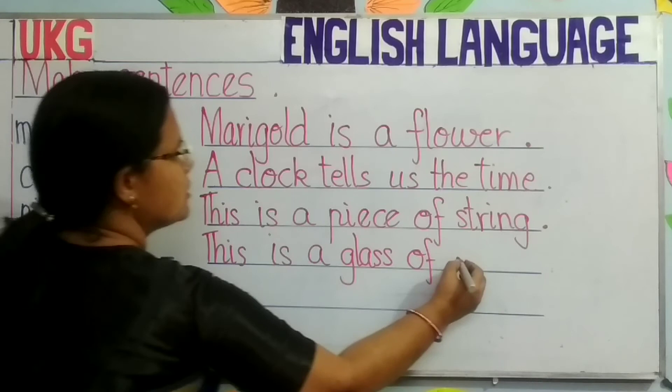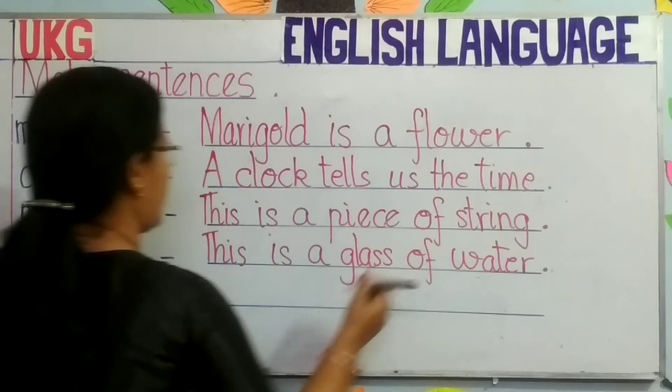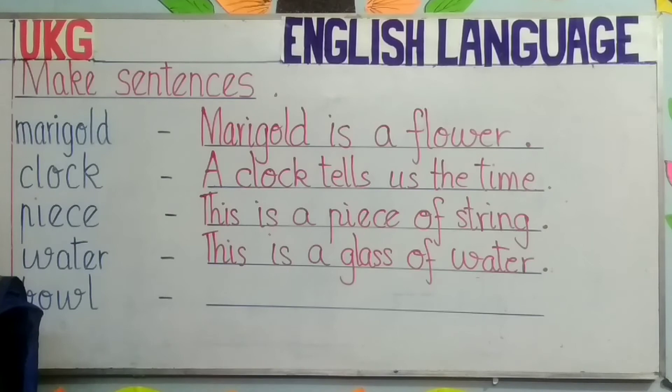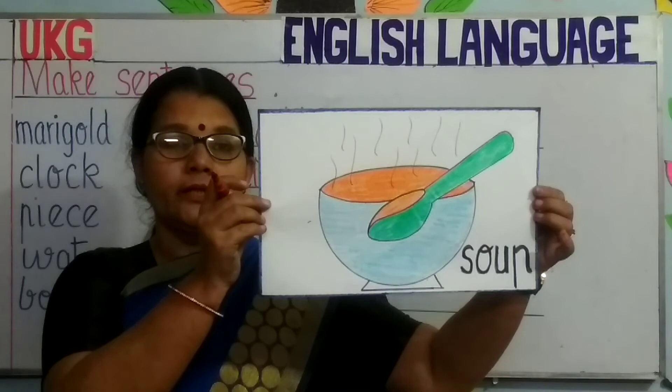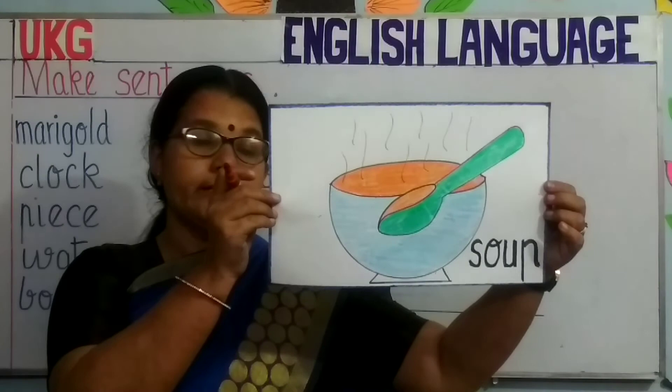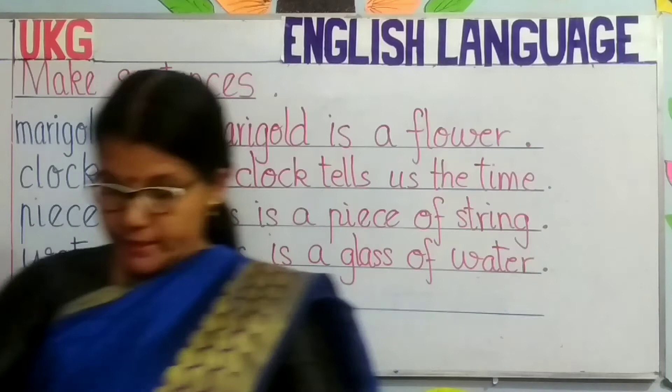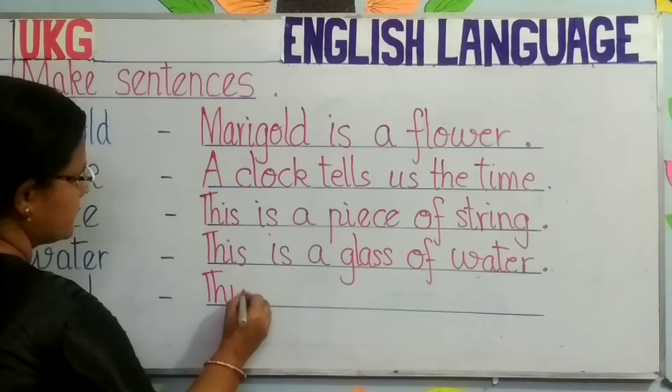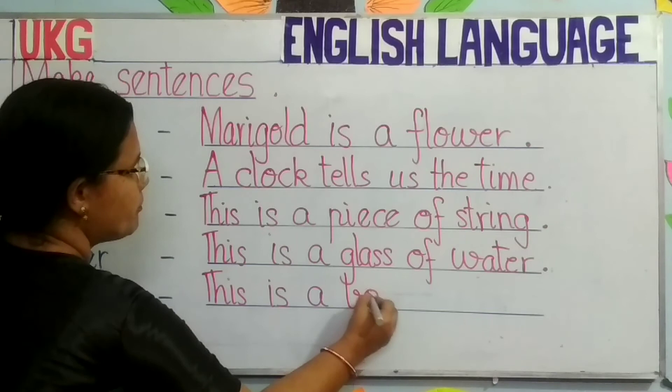And the last word: bowl. What is a bowl, children? Look here — this is a bowl. You can write: This is a bowl of soup. Or you can write: This is a big bowl. There is soup in the bowl. You can use any sentence. I am writing: This is a bowl of soup. And then a full stop at the end of your sentence.